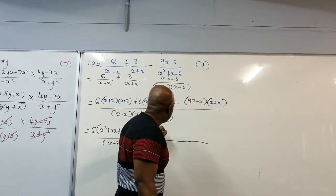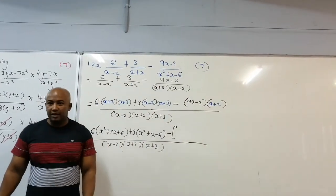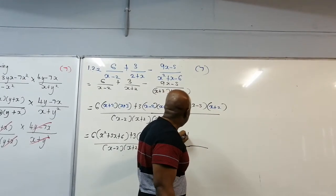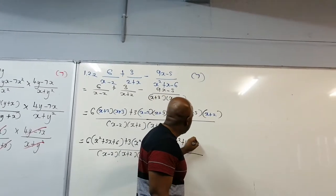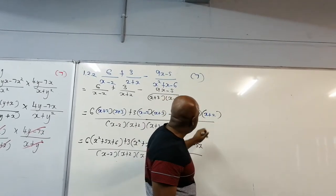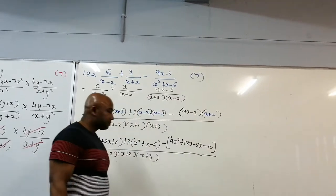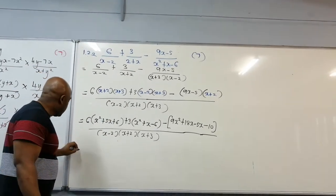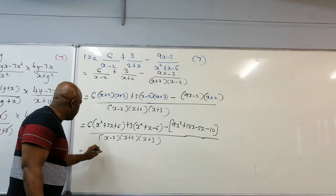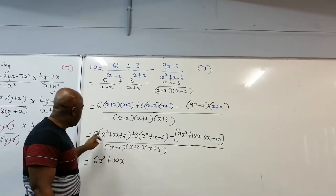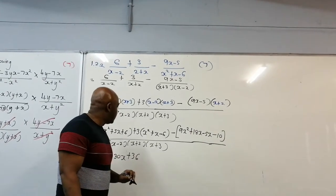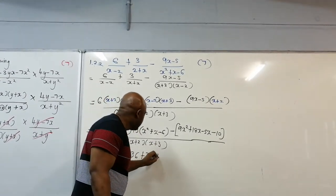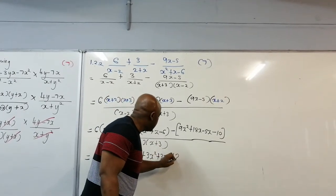Here is where most people make a mistake — you have to open up a bracket. Doing this the long way: 9x times x is 9x squared, 9x times 2 is plus 18x, minus 5 times x is minus 5x, and minus 5 times 2 is minus 10. Now removing all brackets: that gives 6x squared plus 30x plus 36, plus 3x squared plus 3x minus 18.